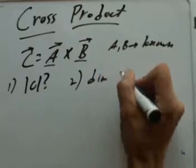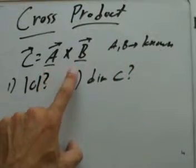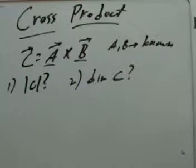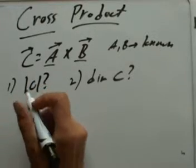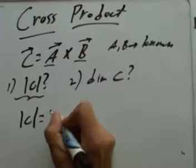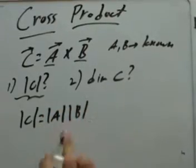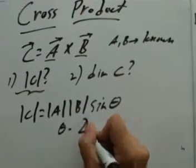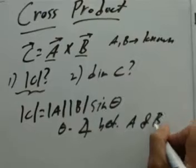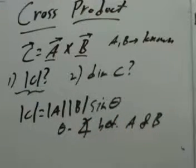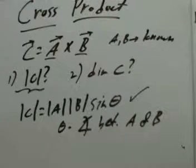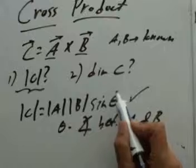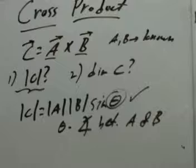The second thing you have to know is what about the direction of C? The result of a cross product of two vectors is another vector, and vectors have magnitude and direction. The magnitude of C can be found by multiplying the magnitude of vector A by the magnitude of vector B, then multiplying by the sine of the angle theta between A and B. This is mathematically what the cross product means. Sometimes finding this angle between A and B can be kind of hard, so we'll leave that to the particular problem you may be working on.